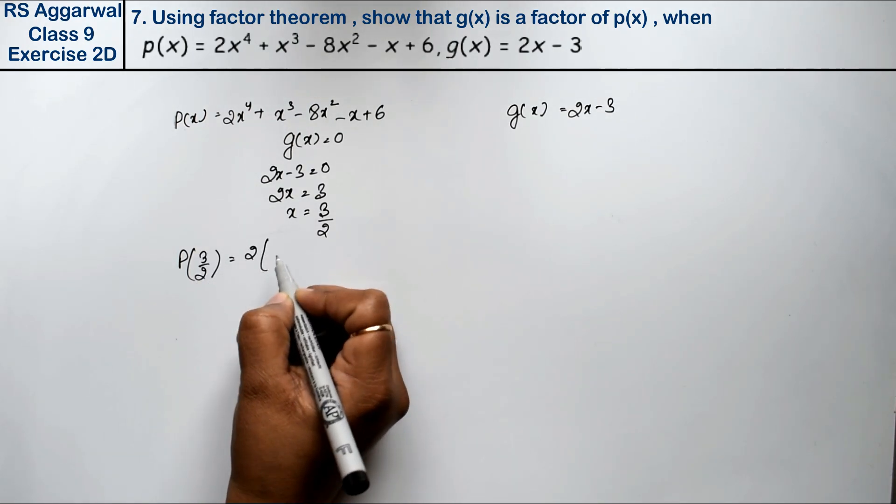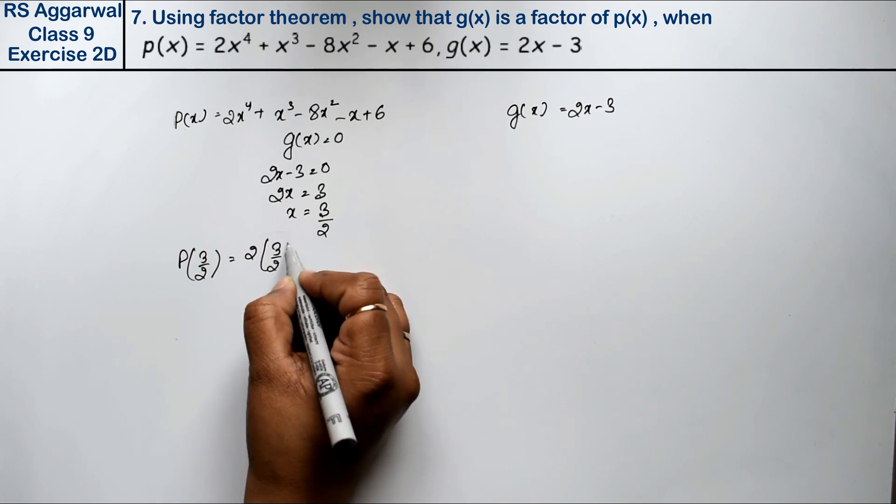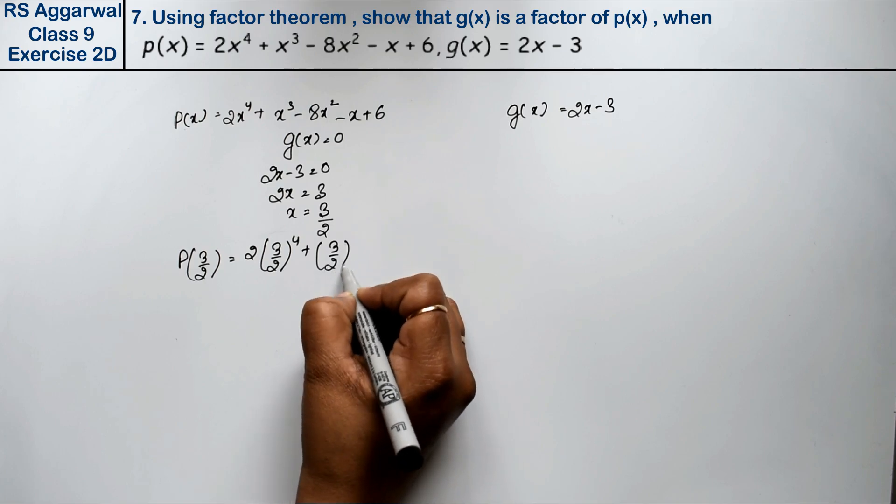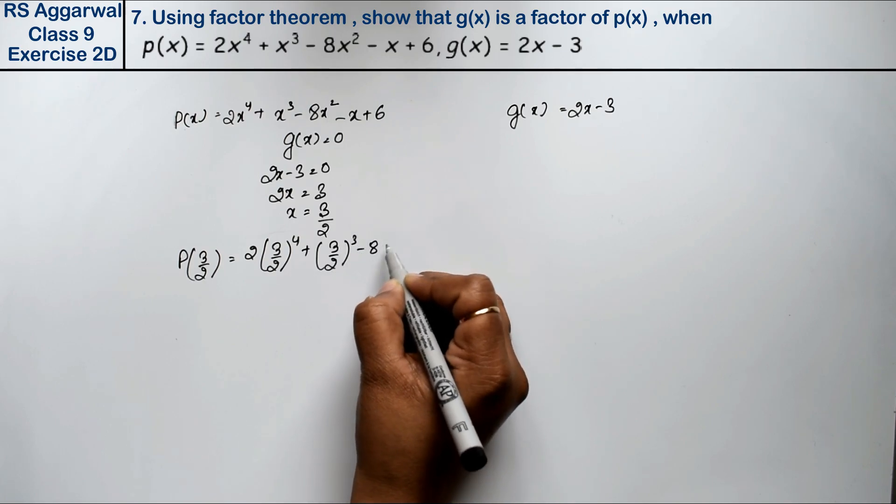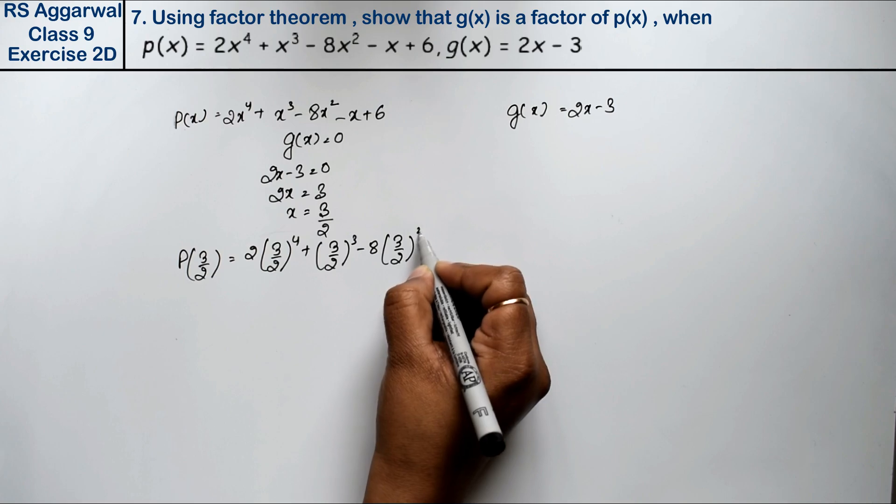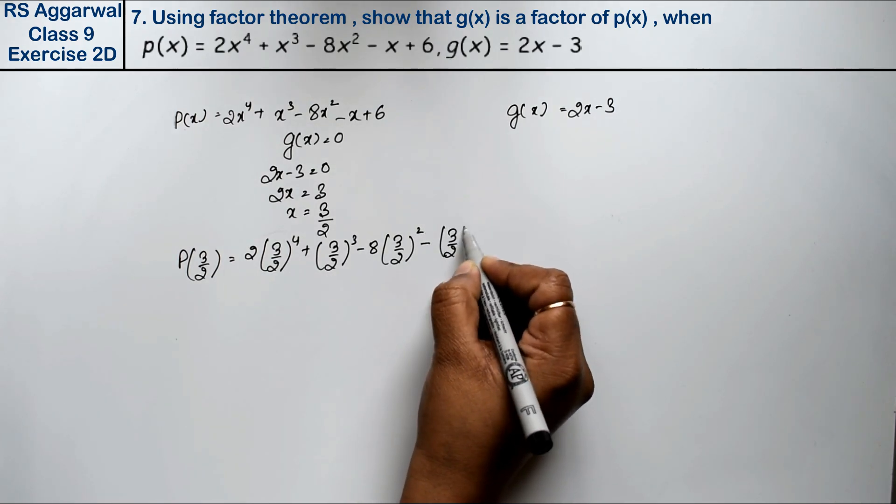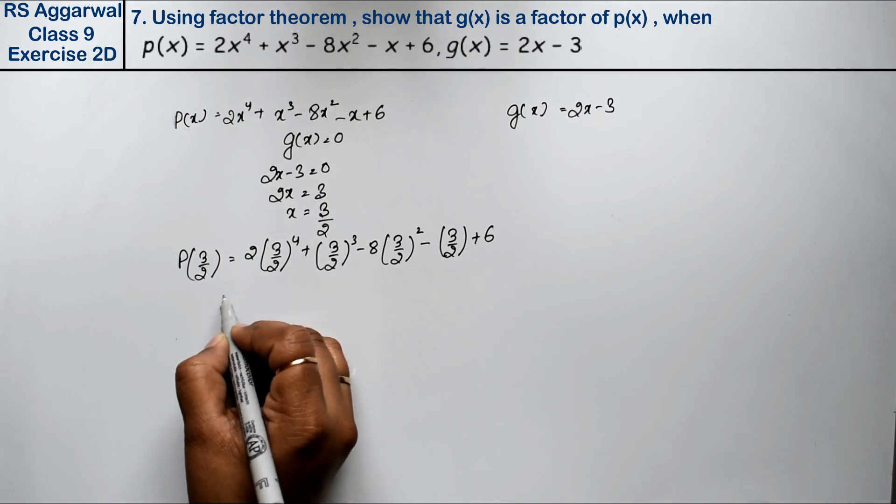So how much will it be? 2 into 3 upon 2 to the power 4 plus 3 upon 2 cube minus 8 into 3 upon 2 square minus 3 upon 2 plus 6.